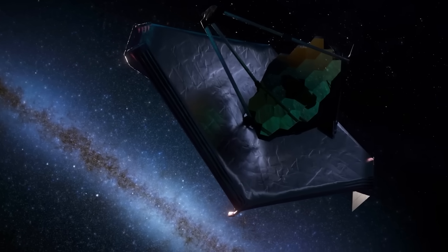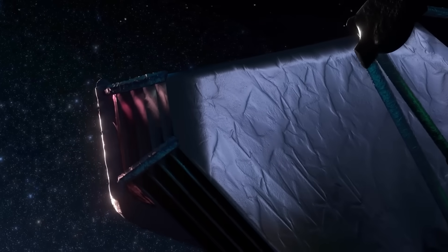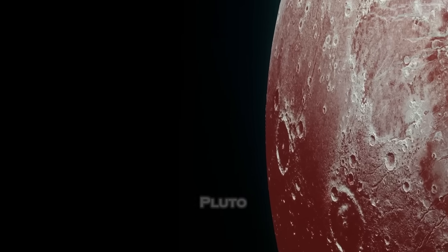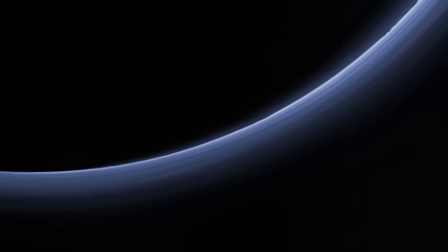When the James Webb Space Telescope aimed its instruments toward Pluto's night side, the world expected nothing but silence. After all, this was the farthest, coldest corner of our solar system, a frozen relic bathed in eternal twilight. But what Webb found was not silence.